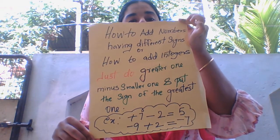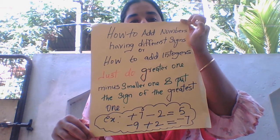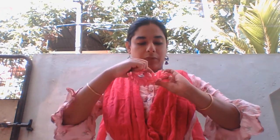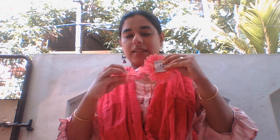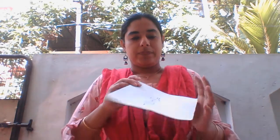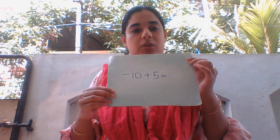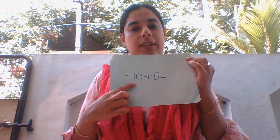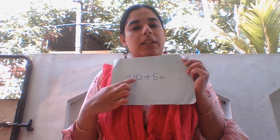This is the way we add numbers having different signs. Now we can do a small activity so you will understand. I have prepared some flowers and put them in a box. There is a number in the center portion of each flower. I have also given an activity card. For example: negative 10 plus 5.